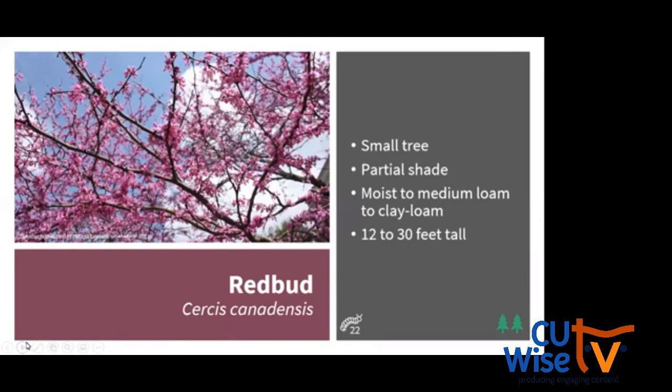Redbud is a very popular landscape tree for its pink flowers that emerge in spring before it leafs out, followed by heart-shaped leaves and bean-shaped seed pods. This plant supports 22 different species of caterpillars, including the io moth caterpillar, and it's also pollinated by bees.